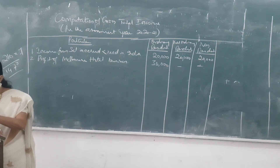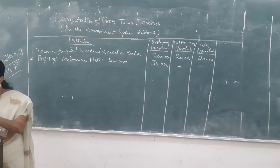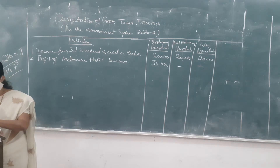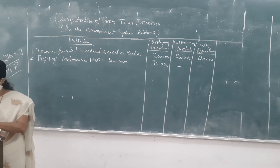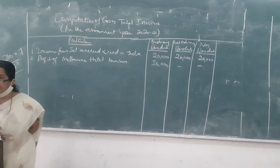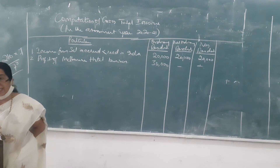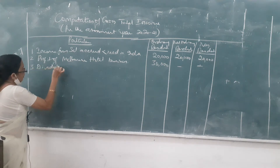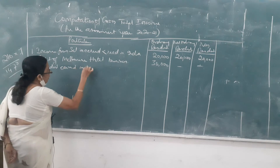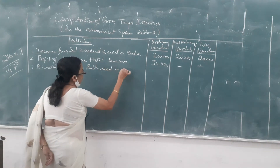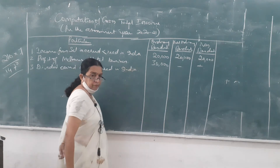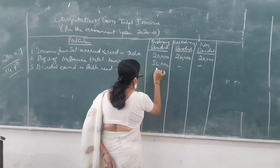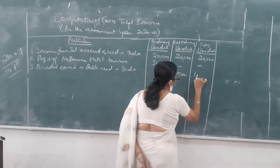Third: dividend declared in Perth but received in India — 4,000. It is a foreign dividend, earned in Perth but received in India. Since this income is received in India, it is applicable to all three categories. Amount: 4,000 each.